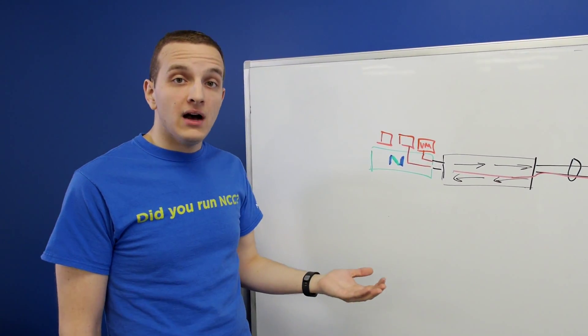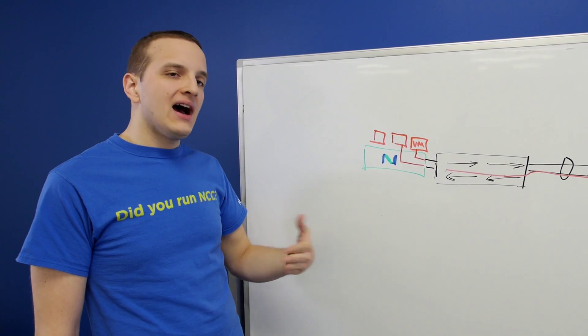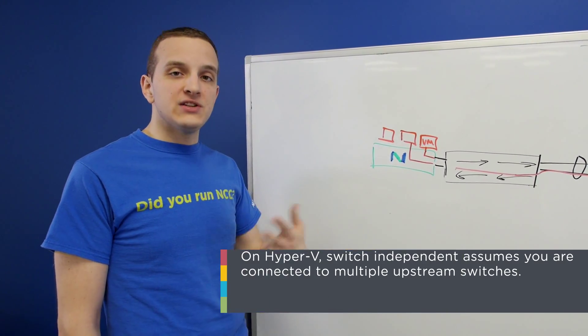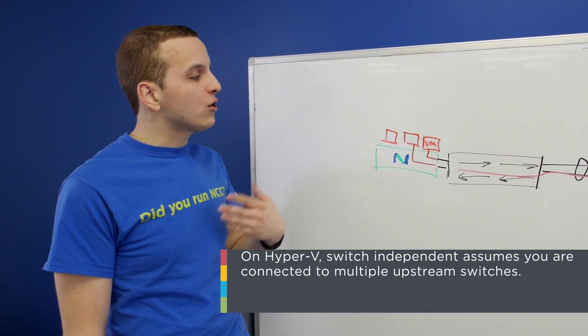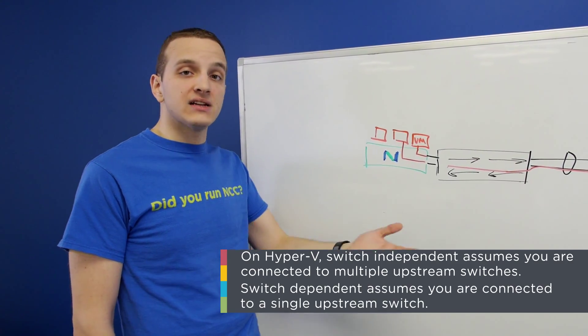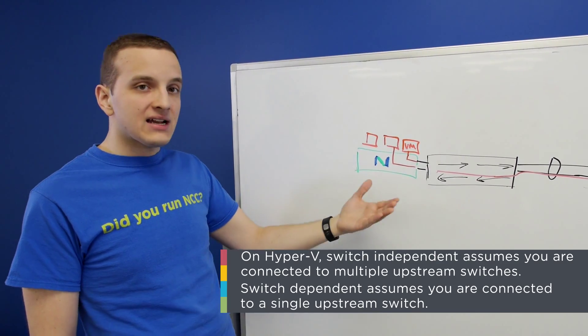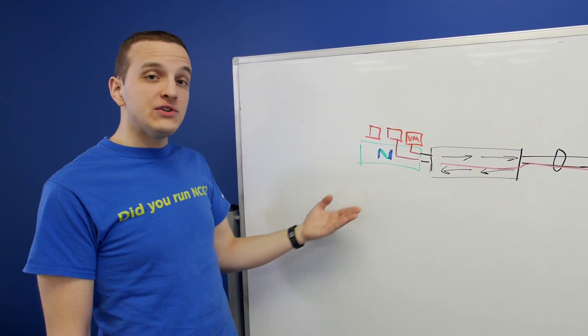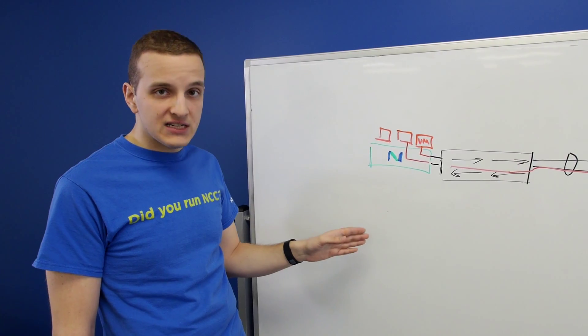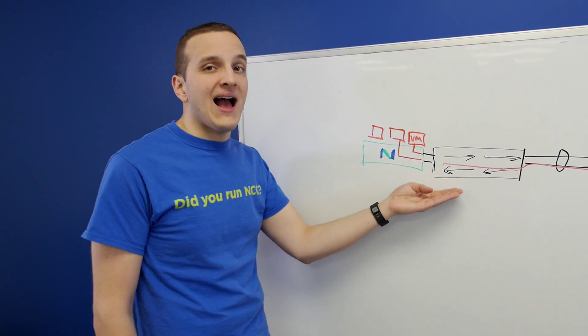Hyper-V also does it, but it does it slightly differently. In Hyper-V, you've got switch independent, which assumes you're connected to multiple upstream switches, or switch dependent, which assumes you're connected to a single upstream switch. So if you choose switch dependent and then route based on IP hash, you would need mode on upstream. If you choose LACP on Hyper-V, which doesn't require any special license, you do mode active upstream.